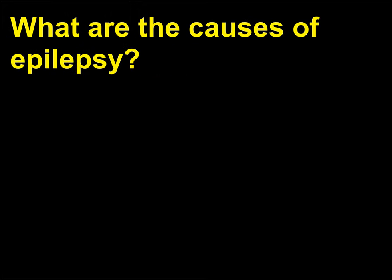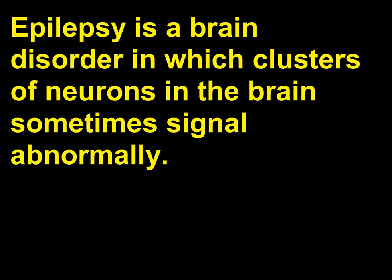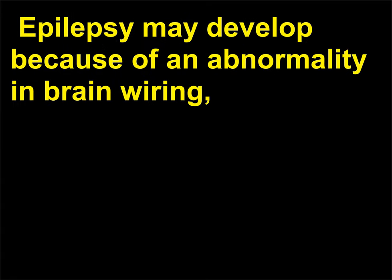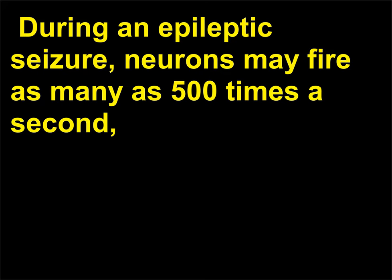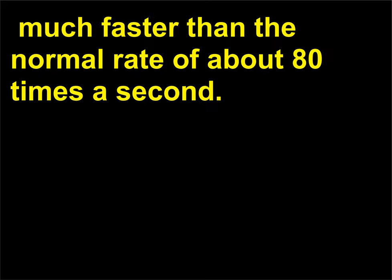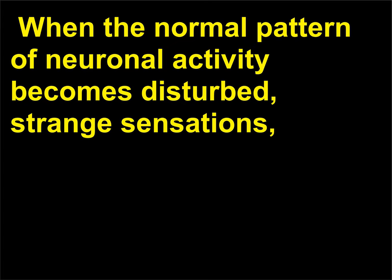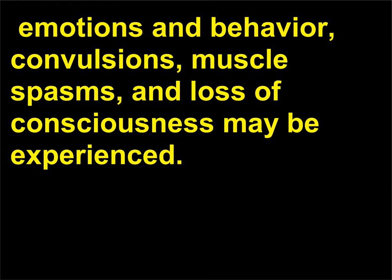What are the causes of epilepsy? Epilepsy is a brain disorder in which clusters of neurons in the brain sometimes signal abnormally. Epilepsy may develop because of an abnormality in brain wiring, an imbalance of neurotransmitters, or some combination of these factors. During an epileptic seizure, neurons may fire as many as 500 times a second, much faster than the normal rate of about 80 times a second. When the normal pattern of neuronal activity becomes disturbed, strange sensations, emotions, and behavior, convulsions, muscle spasms, and loss of consciousness may be experienced.